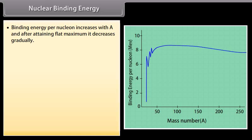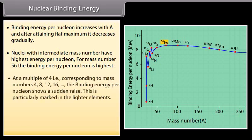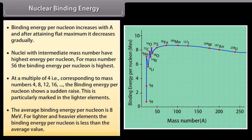Binding energy per nucleon increases with A and after retaining flat maximum it decreases gradually. Nuclei with intermediate mass number have highest energy per nucleon. For mass number 56 the binding energy per nucleon is highest. At a multiple of 4, that is corresponding to mass numbers 4, 8, 12, and 16, the binding energy per nucleon shows a sudden raise. This is particularly marked in the lighter elements. The average binding energy per nucleon is 8 MeV. For lighter and heavier elements the binding energy per nucleon is less than the average value.